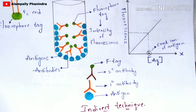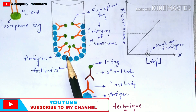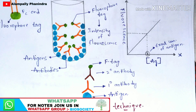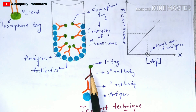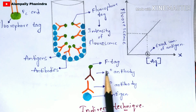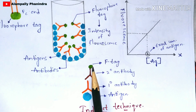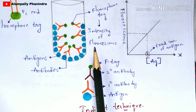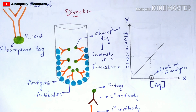Now let us discuss the indirect technique. In the indirect technique, in some cases when antibodies interact with the antigen, a proper result may not be obtained. To prevent that, you add secondary antibodies. The antigen and primary antibody interaction is the same process as before, but then secondary antibodies — which consist of the fluorophore tag — are added. When the secondary antibody interacts with the primary antibody-antigen complex, the fluorophore tag produces the intensity of fluorescence, which is obtained by the spectrophotometer, and the exact concentration of the unknown antigen is determined by graphing.